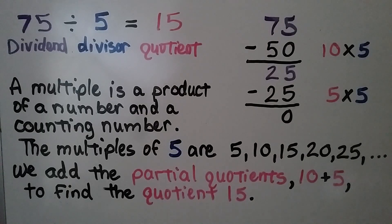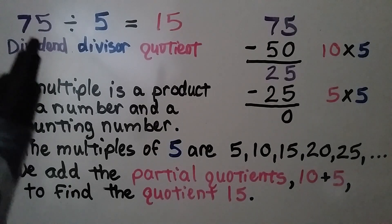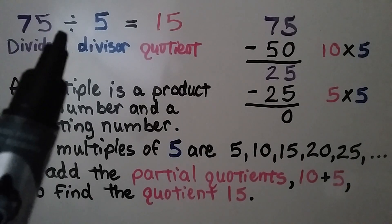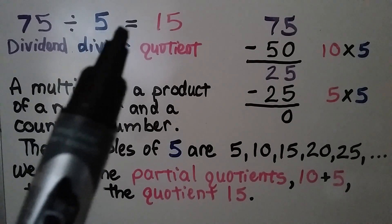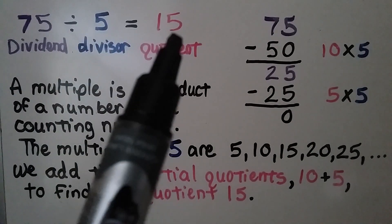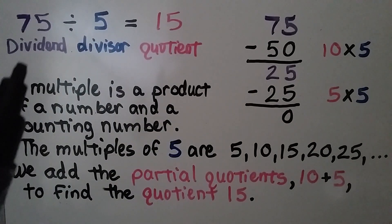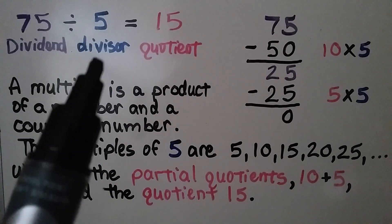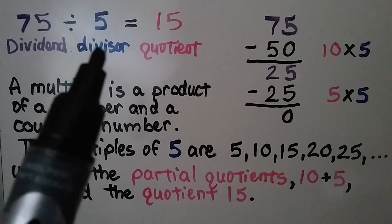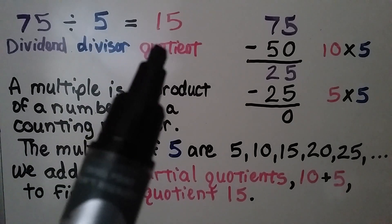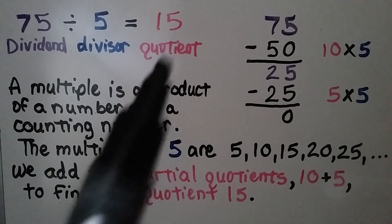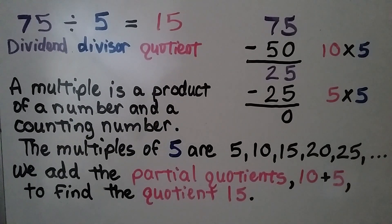Here we have 75 divided by 5 is equal to 15. The dividend is 75, the divisor is 5, and the quotient — the answer — is 15.